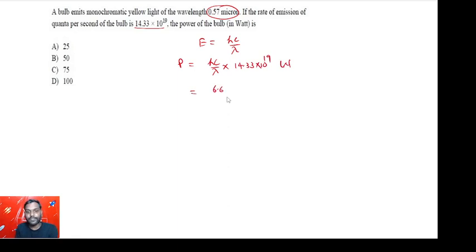c is the speed of light, 3 into 10 raised to the power 8. Lambda is the wavelength. You have to put this value in meters, so converting micrometer into meter, you'll have to multiply by 10 power minus 6, into 14.33 times 10 raised to the power 19.